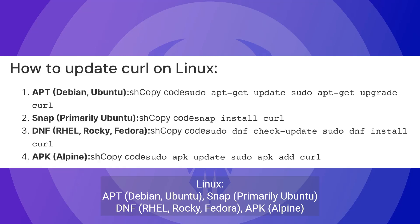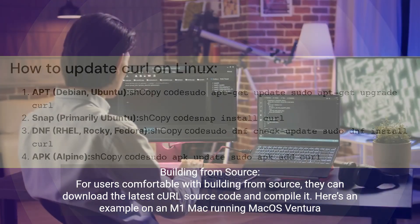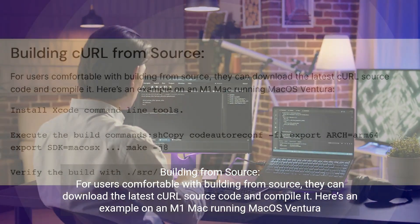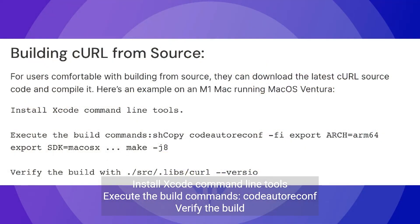For Linux, update curl using the appropriate package manager: on Debian/Ubuntu use sudo apt-get update && sudo apt-get upgrade curl; on Ubuntu with snap use snap install curl; on RHEL/Rocky/Fedora use sudo dnf check-update && sudo dnf install curl; on Alpine use sudo apk update && sudo apk add curl.